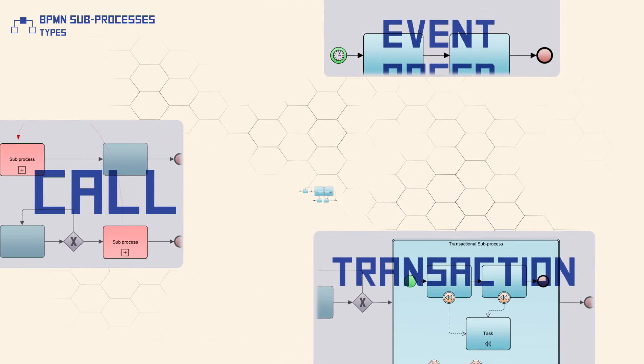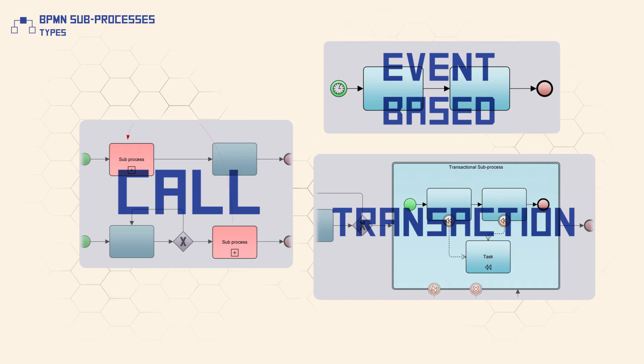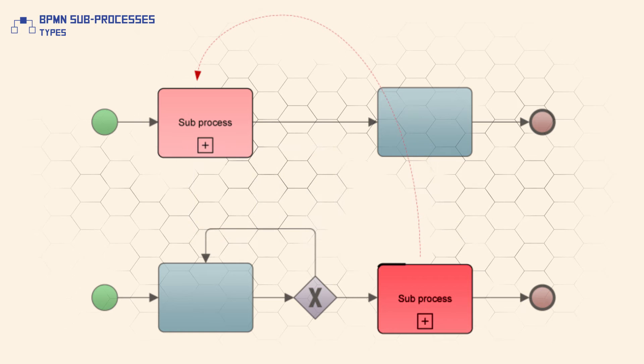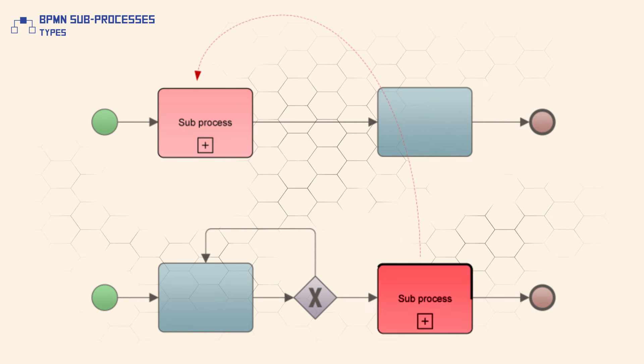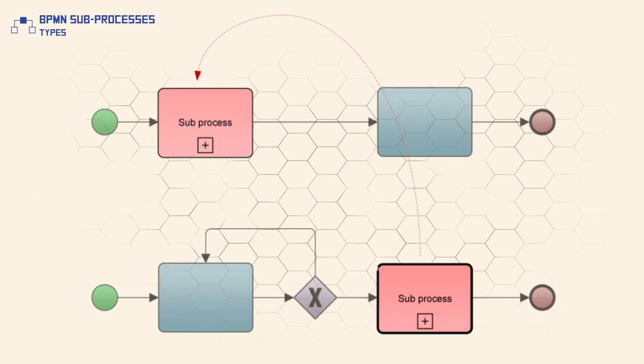Besides simple subprocesses, BPMN defines three special types of subprocess. A call subprocess represents a reusable subprocess. It identifies a point in the process where a global subprocess is used. A call subprocess object must have a thick boundary line.